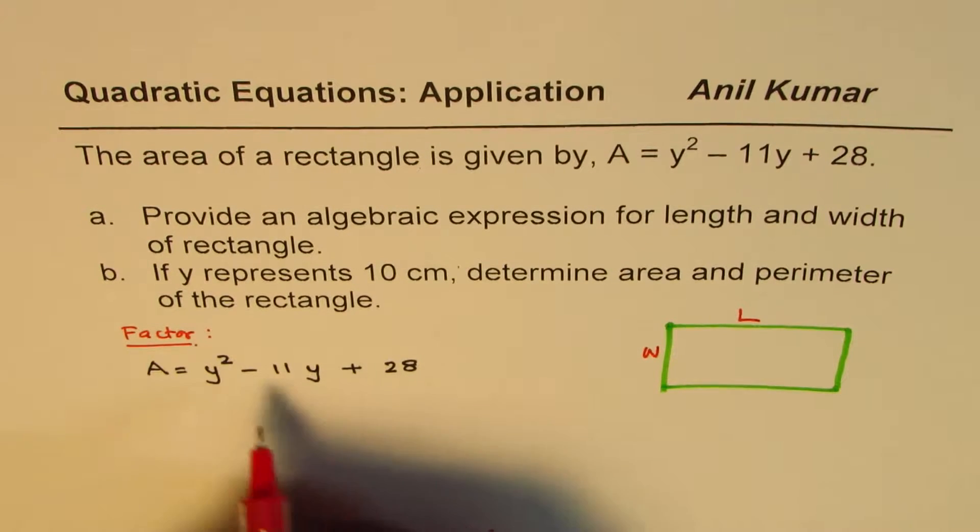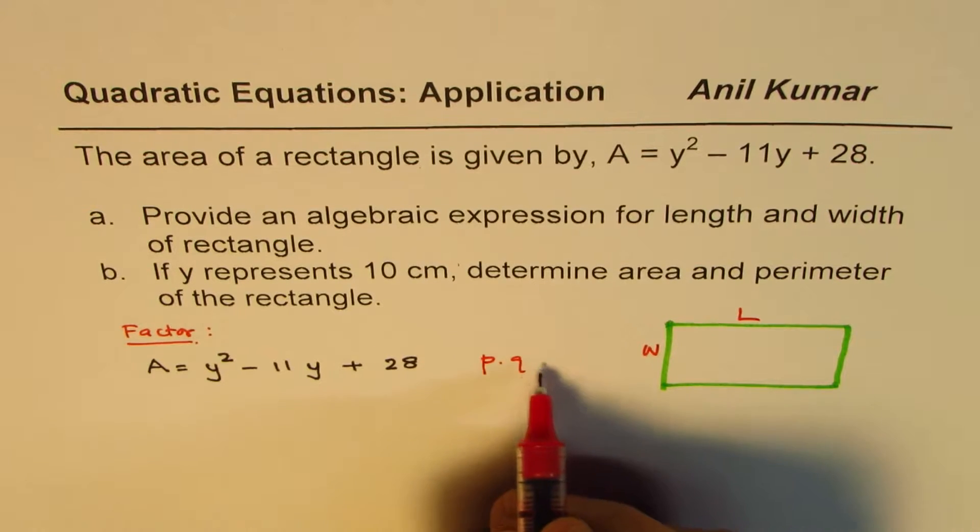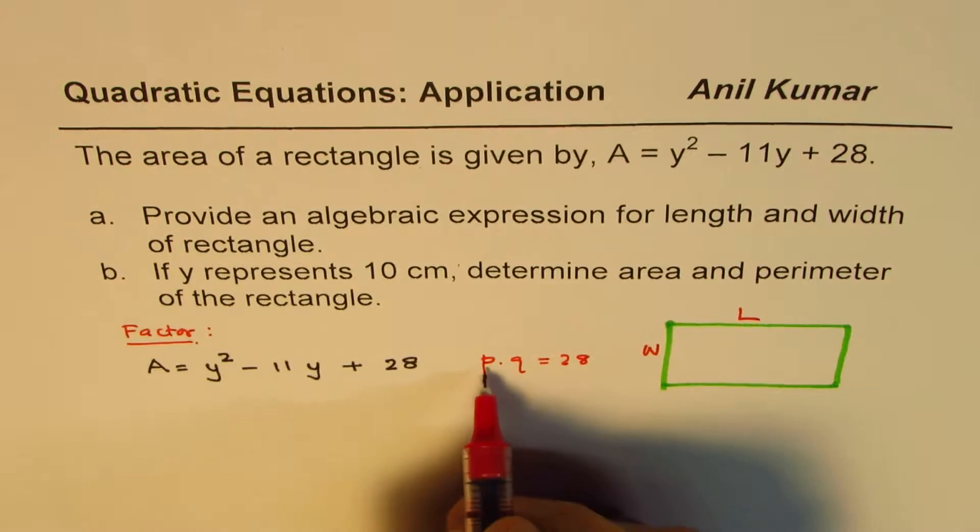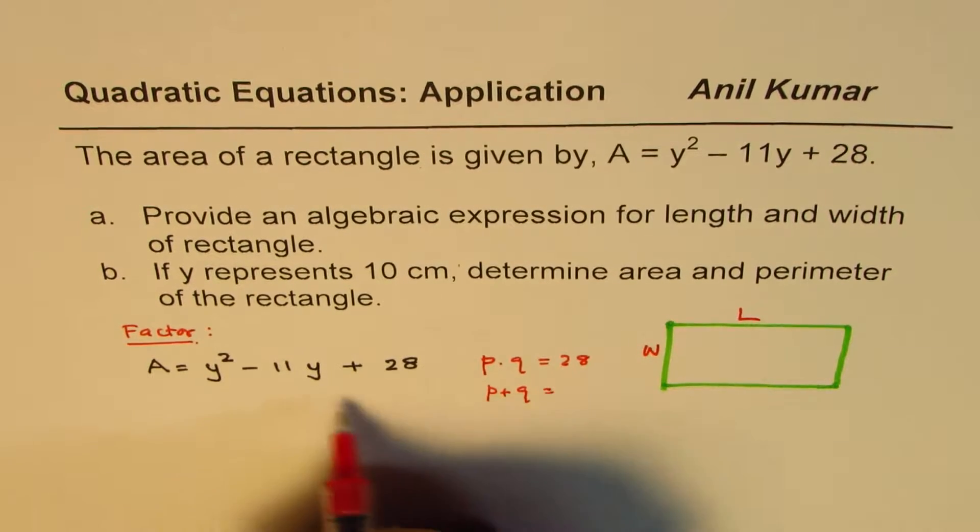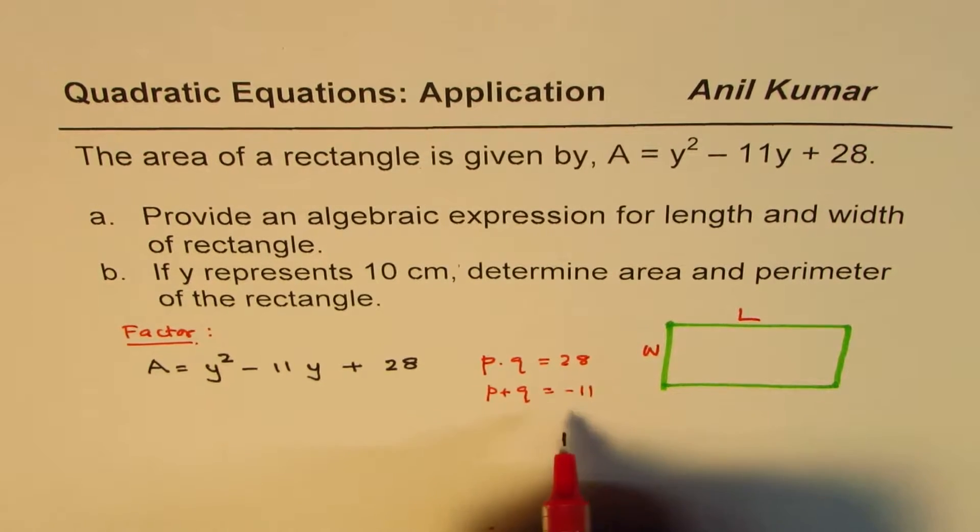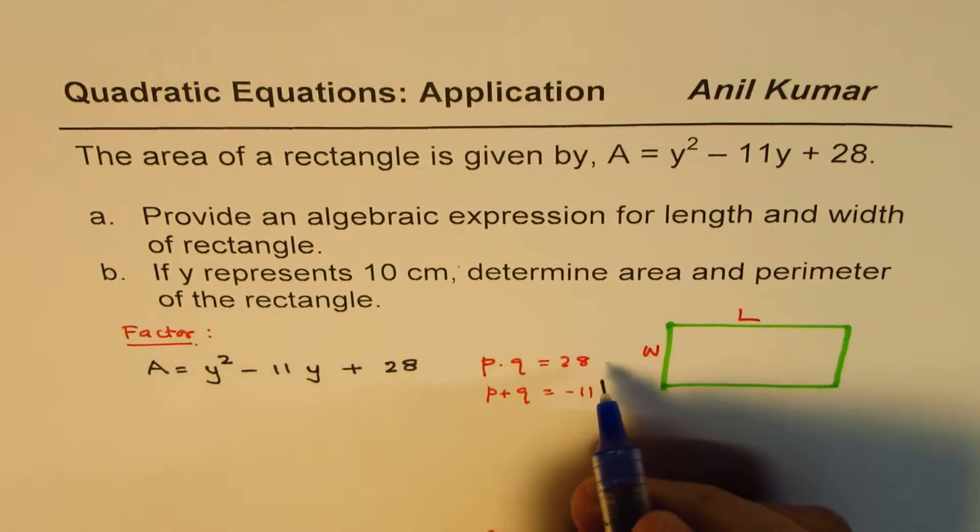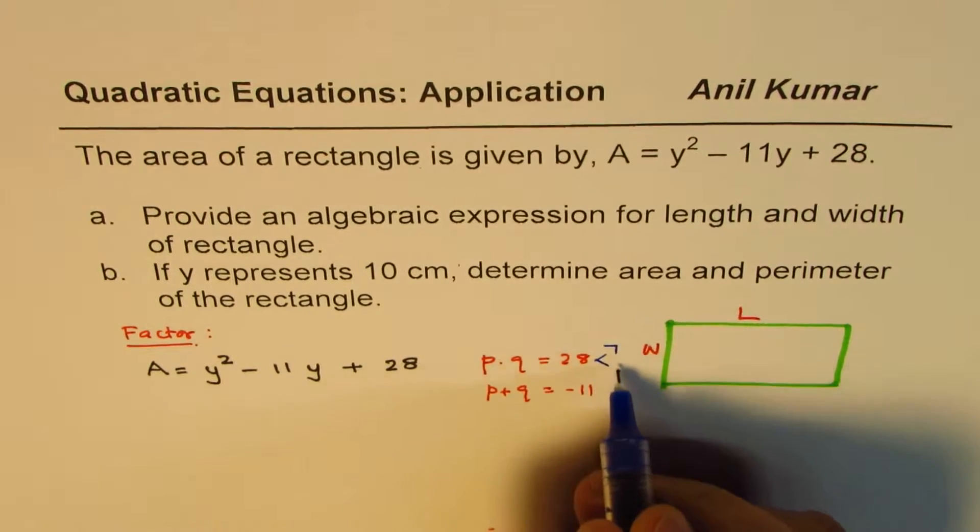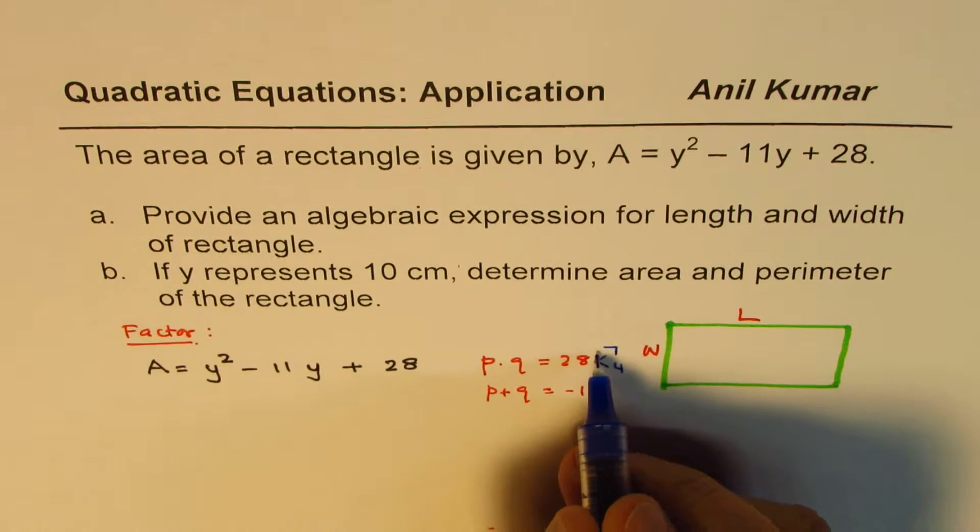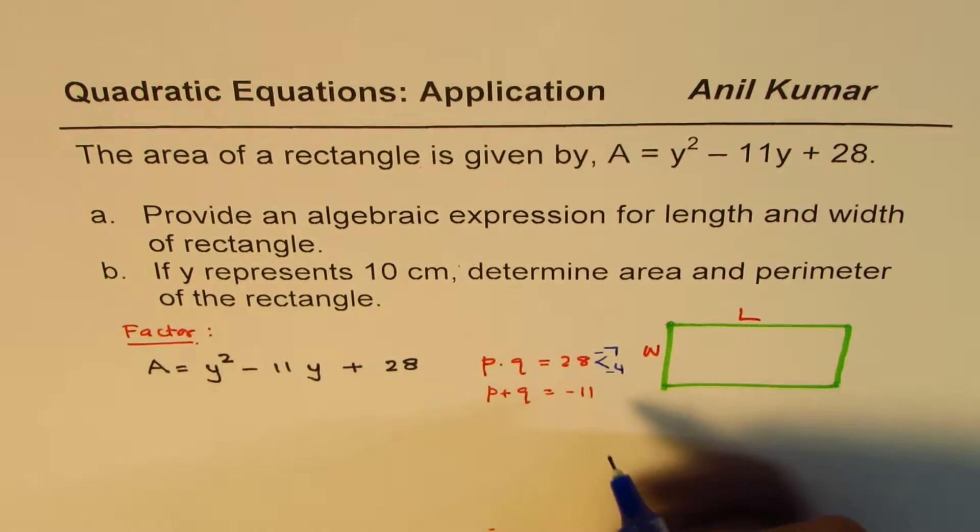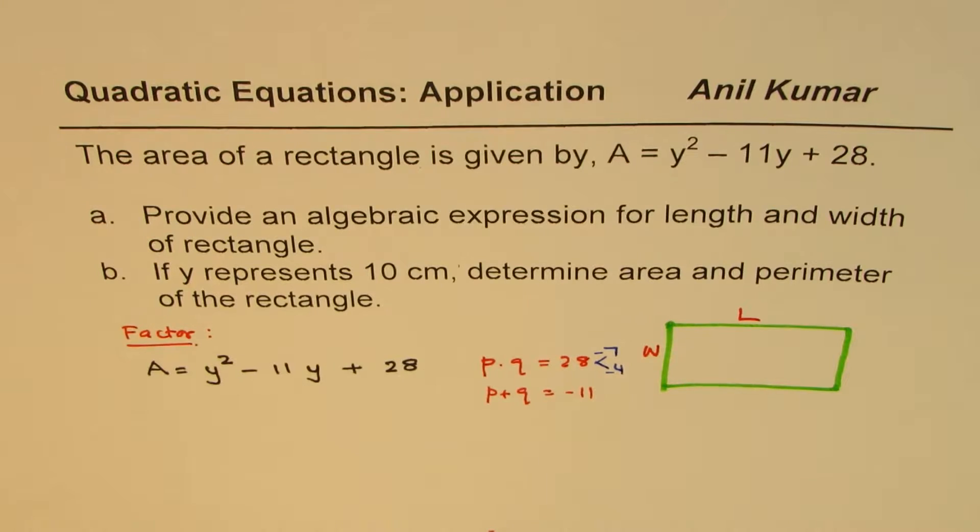Now let's see how to factor it. To factor this, we are looking for two numbers whose product is 28. So when we multiply two numbers, let's say P and Q, we get 28. And if we add them, we should get minus 11. So the two numbers are 7 and 4. When you multiply, you get 28. But we need negative. So negative 7, negative 4 are the numbers for us.